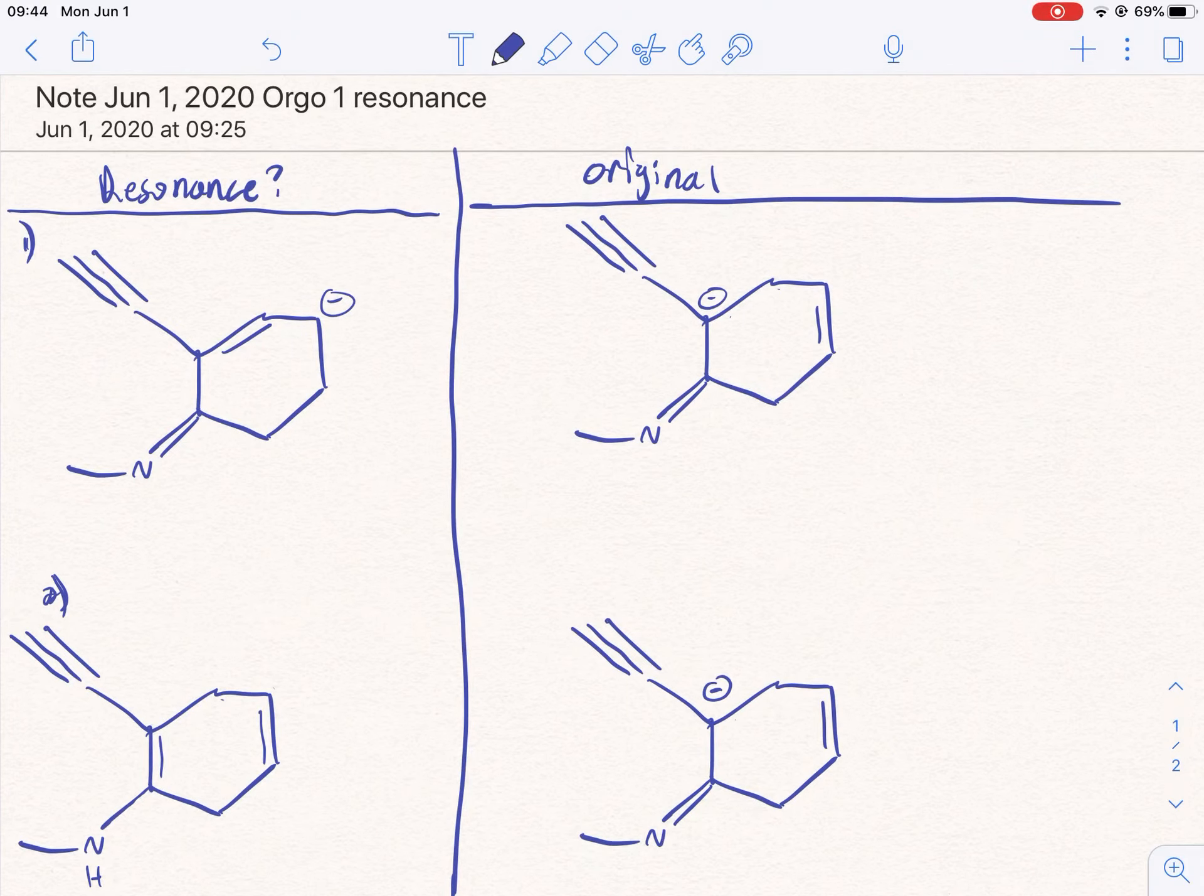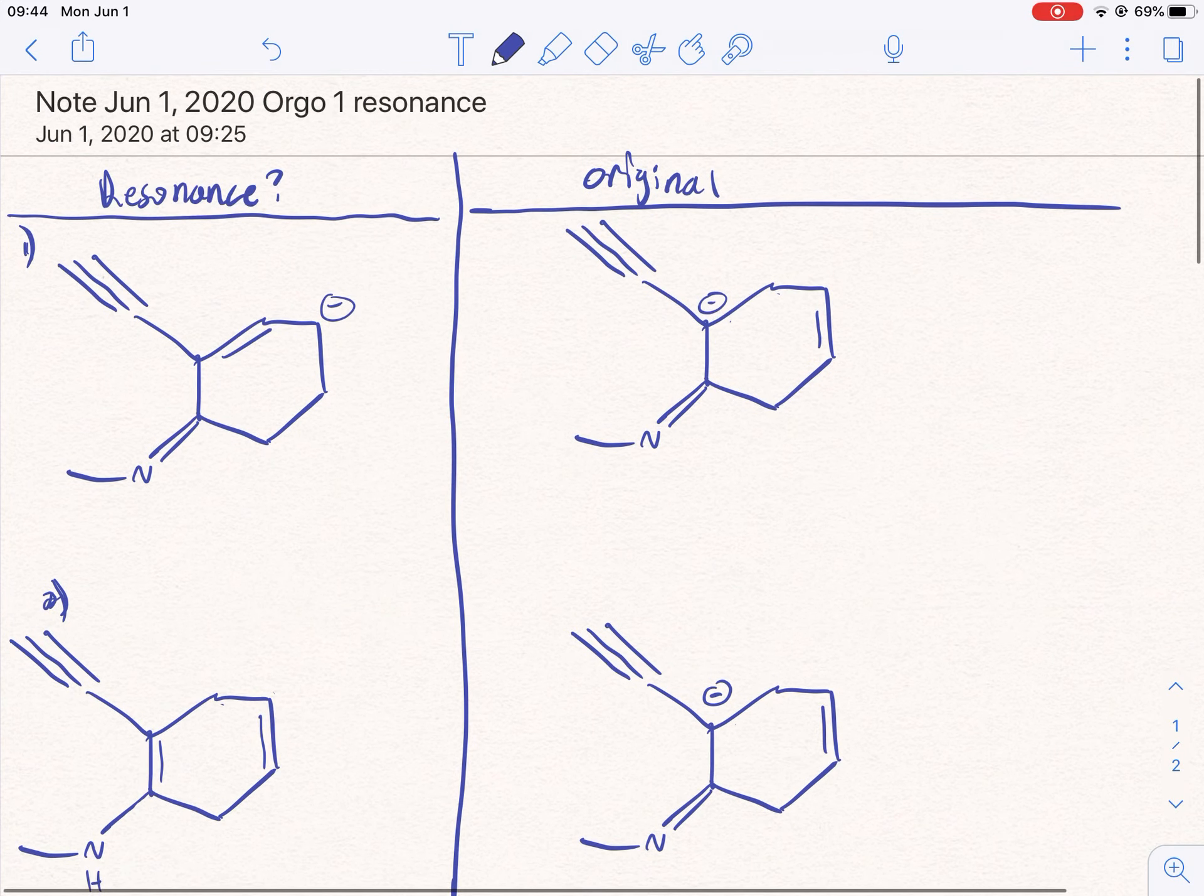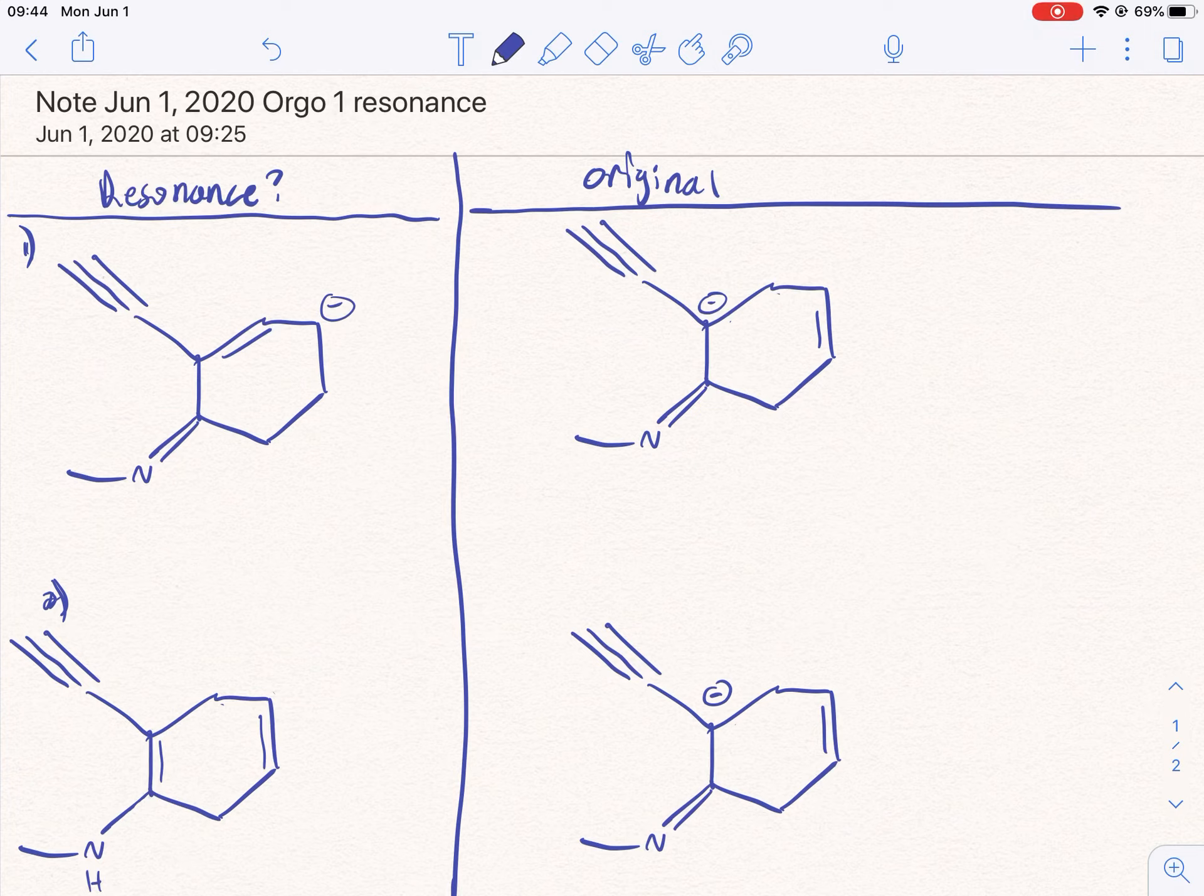Okay guys, I just decided to make a video describing this question that someone had. So the question is asking which of the following structures is or are not a resonance form of the following species. And species as in they're saying this structure is like the main one you're comparing it to.